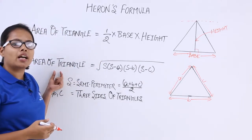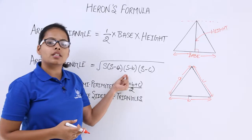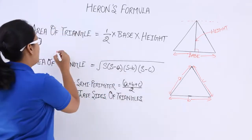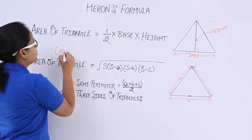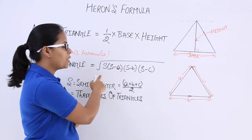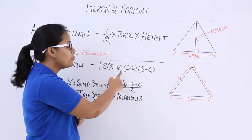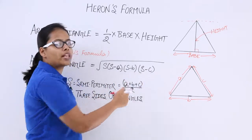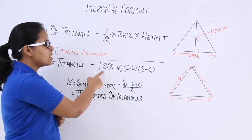And what is the area of a triangle by Heron's formula? This is Heron's formula. This formula is S into S minus A into S minus B into S minus C. So what is this S here?